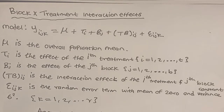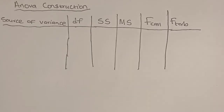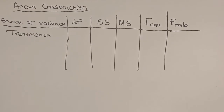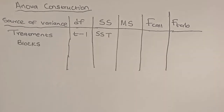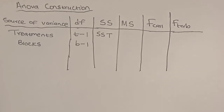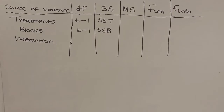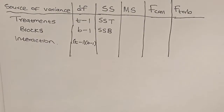k ranges from 1 to the number of replications. We'll first need the ANOVA table. From the ANOVA table we have source of variance, degrees of freedom, sum of squares, mean sum of squares — calculated and tabulated. For source of variance, we have treatments with degrees of freedom t minus 1 and sum of squares SST. We also have blocks with degrees of freedom b minus 1 and sum of squares SSB. We also have interaction with degrees of freedom given by the product of the degrees of freedom of the treatment and the degrees of freedom of the blocks, which is (t minus 1) times (b minus 1).